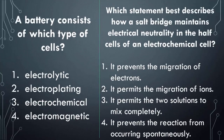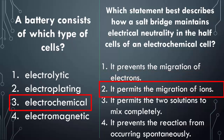Let's try a quick quiz. First question: a battery consists of what type of cells? The answer is electrochemical. Second question: which statement best describes how a salt bridge maintains electrical neutrality in the half cells of an electrochemical cell? It permits the migration — the movement — of ions.